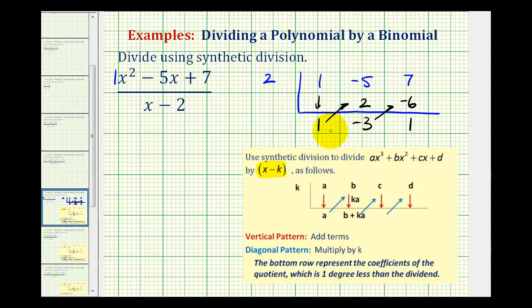Now these values here do represent our quotient. This last term here would be the remainder, but there's also a theorem that tells us if we divide a degree two polynomial by a degree one binomial, the difference of these degrees will be the degree of our quotient.